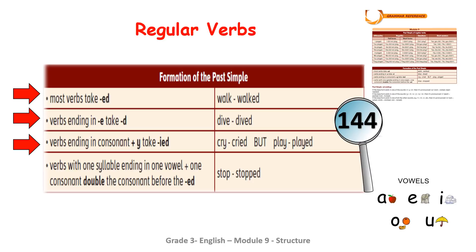The last tip: verbs with one syllable ending in one vowel plus one consonant — you have to double the consonant before adding 'ed.' For example, the verb 'stop' becomes 'stopped' with a double 'p.'